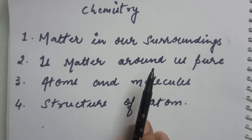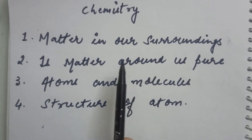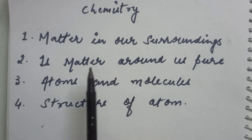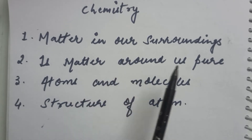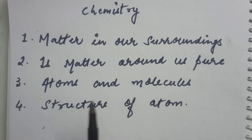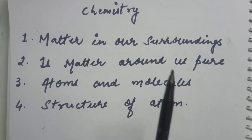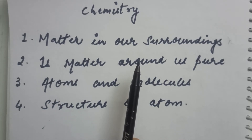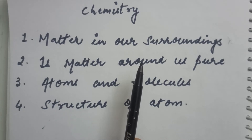In 9th class there are 4 chapters of chemistry. The first one is Matter in Our Surroundings. The second one is Matter Around Us Pure. The third one is Atoms and Molecules. And the fourth one is Structure of Atoms. So now we are going to start with the first chapter, that is Matter in Our Surroundings.